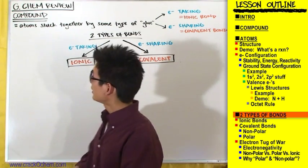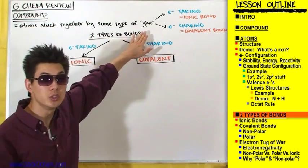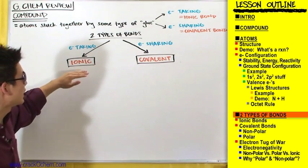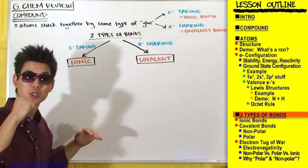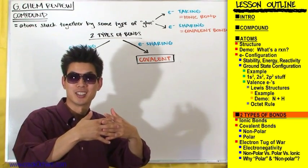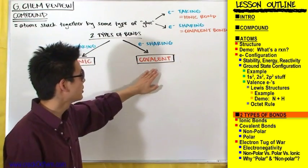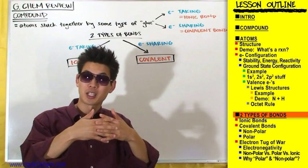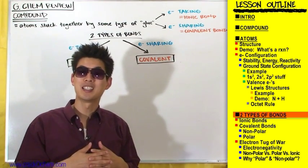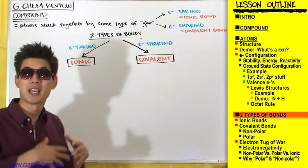We started out today's session by talking about how compounds are atoms that are stuck together by some type of glue, some type of bond. There are two types of bonds: an ionic bond that results from one atom taking electrons from another atom, or a covalent bond which results from two atoms sharing electrons. Now here's where we're going to distinguish between electron sharing, which forms a covalent bond, and electron taking, which forms an ionic bond.